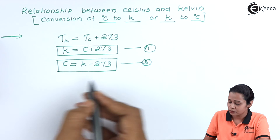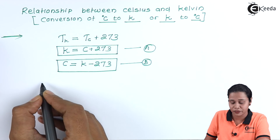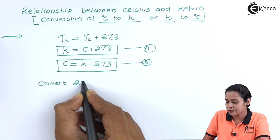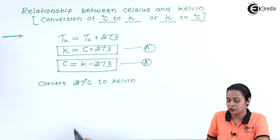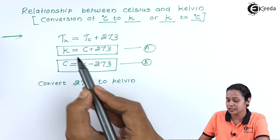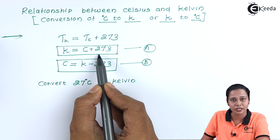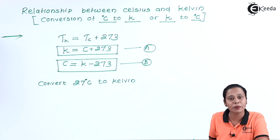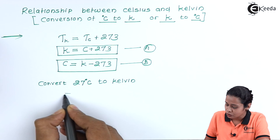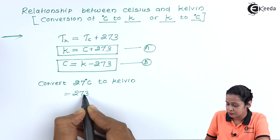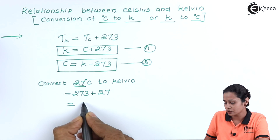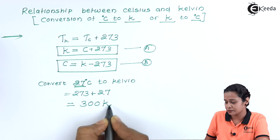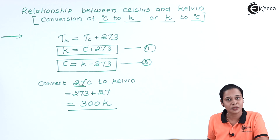For example, to convert 27 degrees Celsius to Kelvin: using K = C + 273, we get K = 273 + 27 = 300 Kelvin. In this way we can convert degree Celsius to Kelvin.